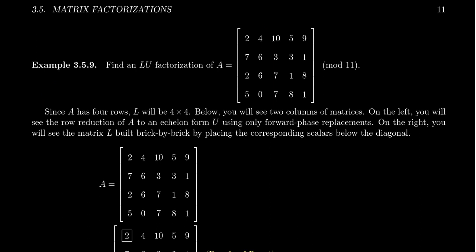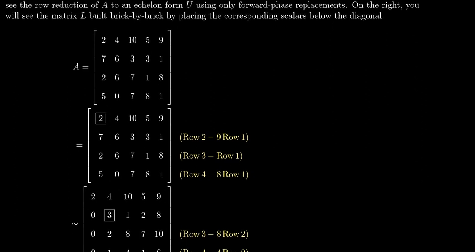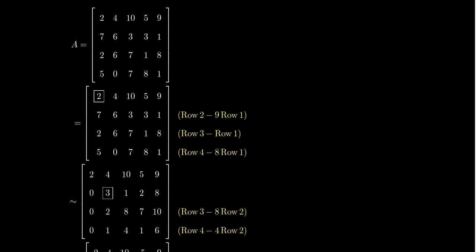Consider the following four by five matrix A. We're going to work over mod 11 in this example — switching the field from the real numbers to a finite field ZP doesn't really make any difference in how this calculation goes. Because matrix A has four rows, matrix L is going to be four by four, and matrix U will also be four by five since the echelon form has the same shape as A. L is square because we're multiplying on the left of U, so it needs to be four by four.